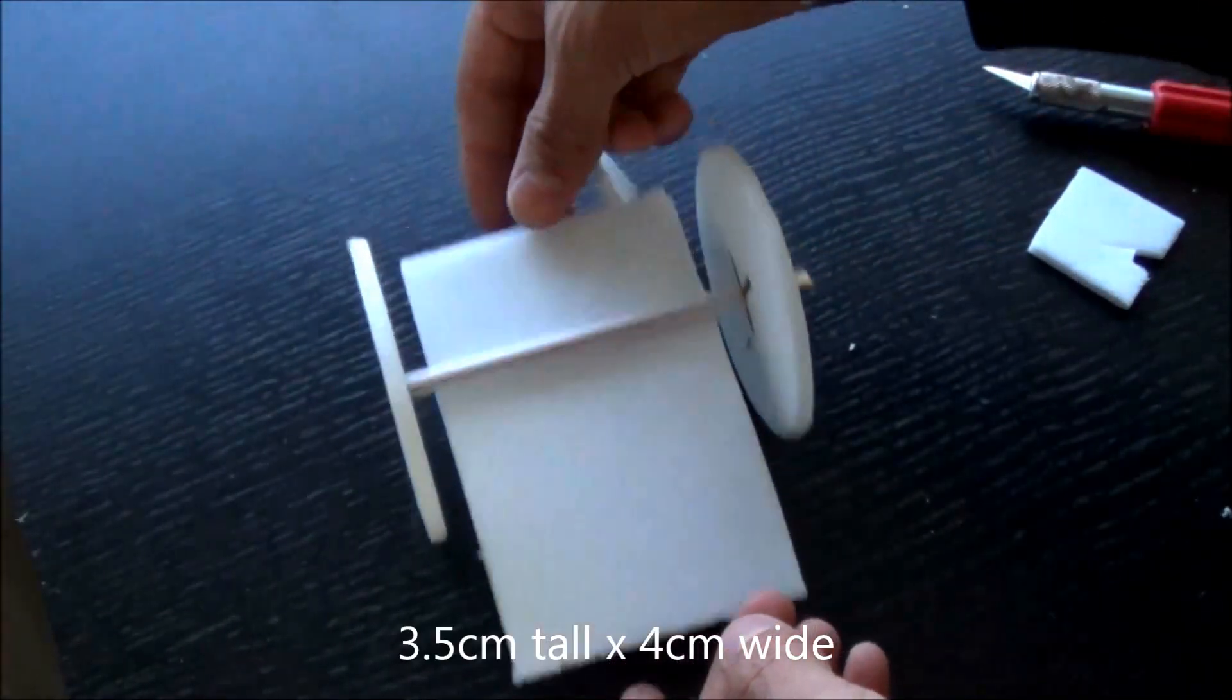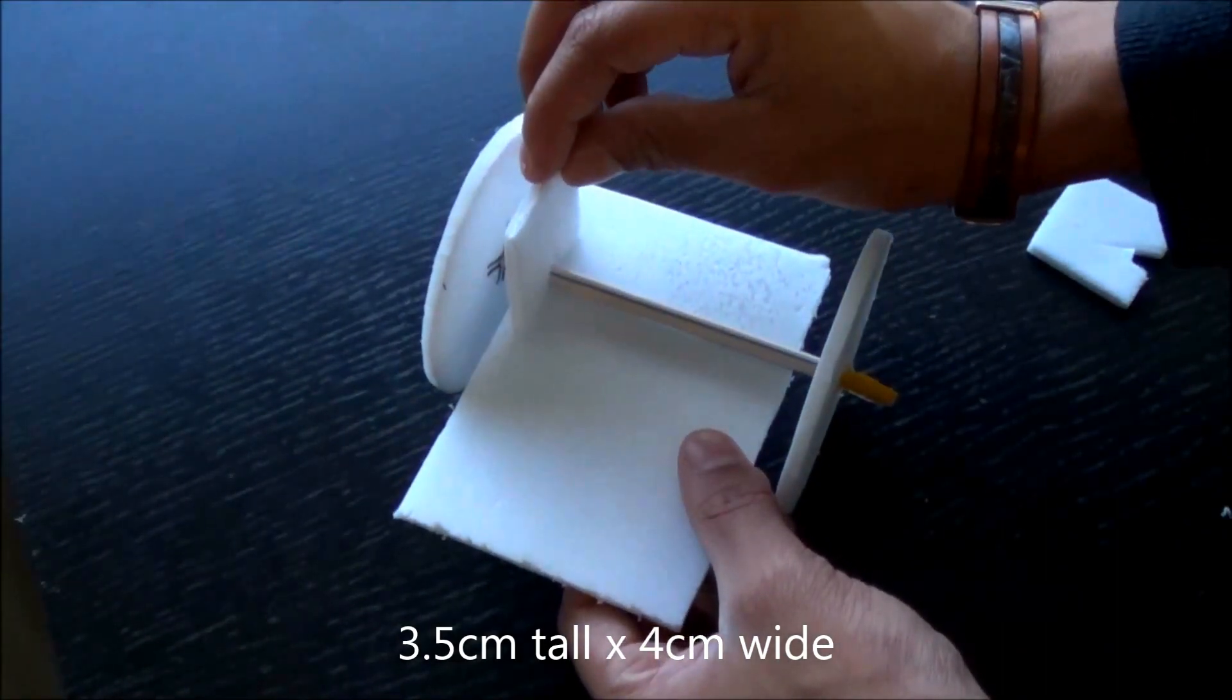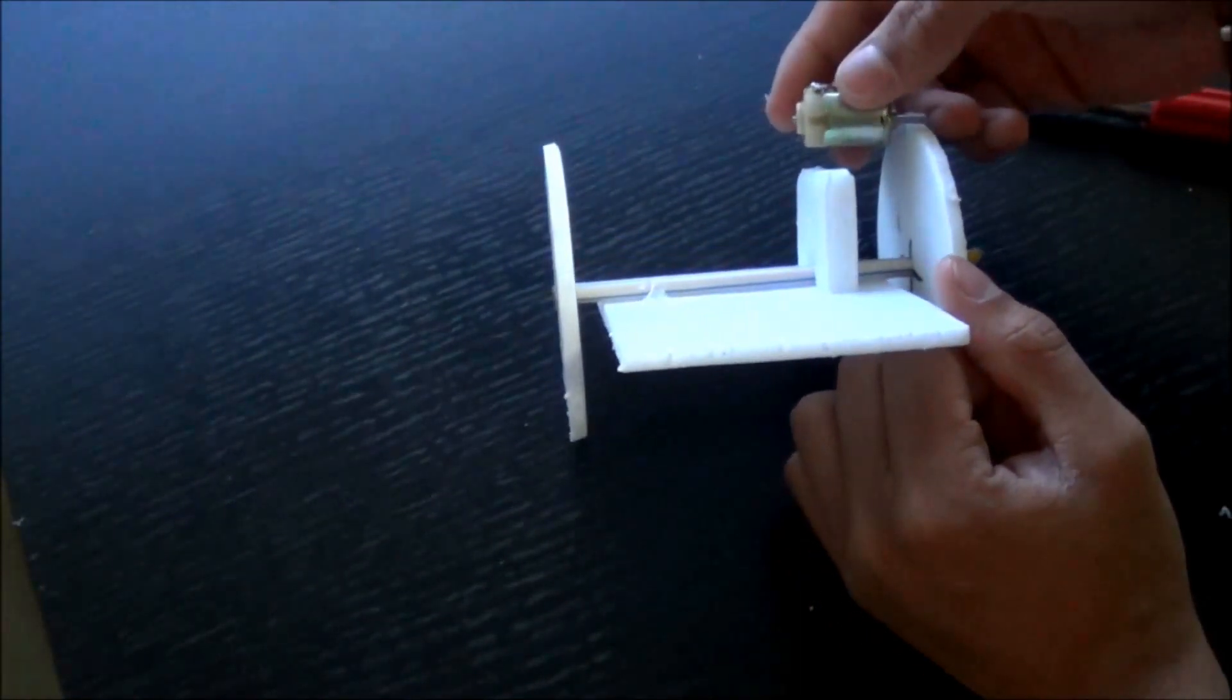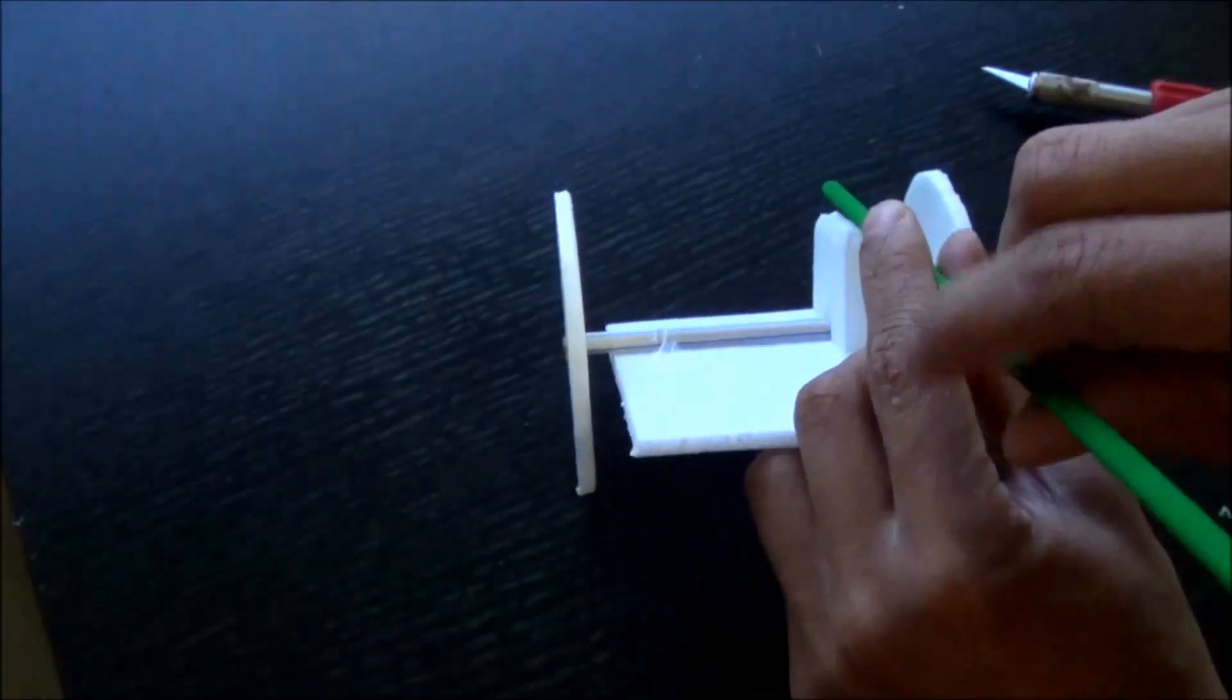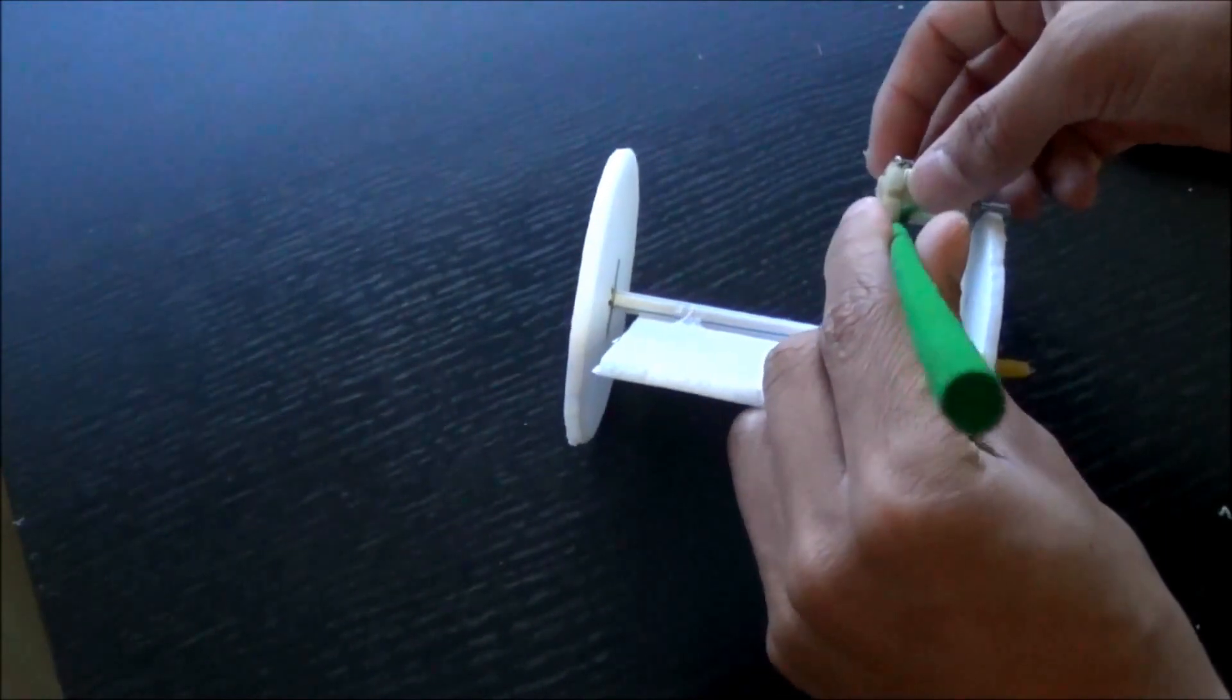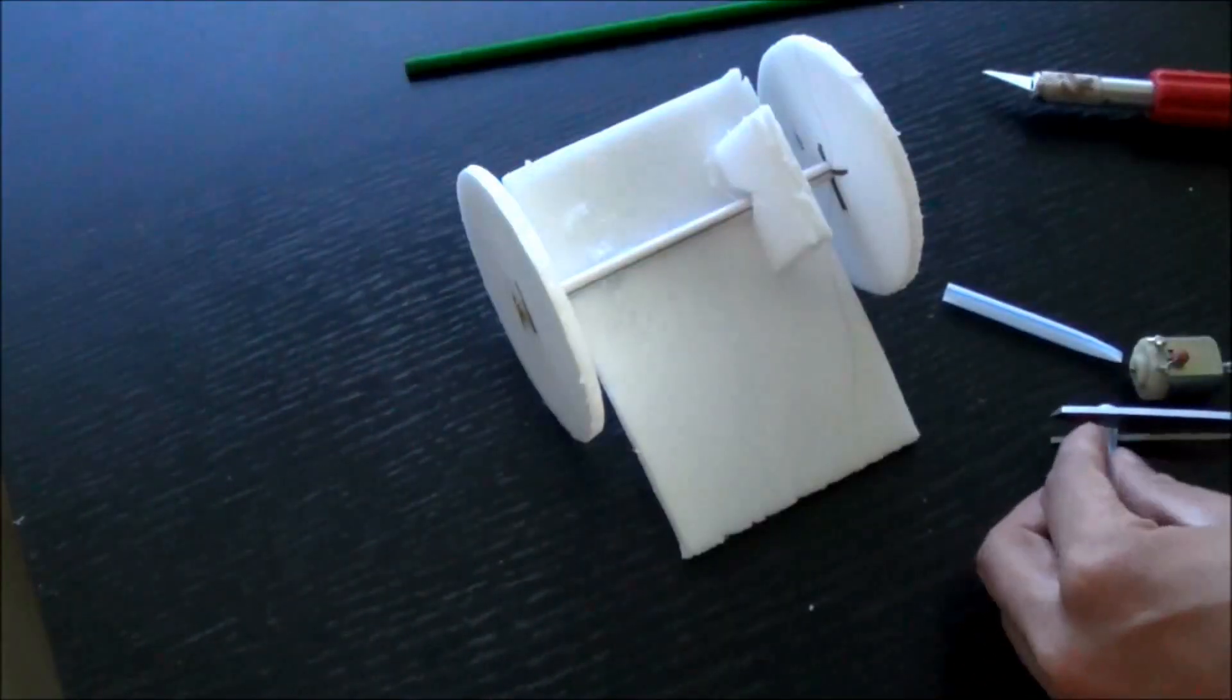I got about two pieces of foam 3.5 centimeters tall by 4 centimeters wide with the notch in the middle to prop up the motor. As you can see I cut them a little shorter than the motor. Basically you want to cut them so that a straw or dowel the size of a straw can fit in between the motor and the piece of styrofoam, and the motor will sit on that same angle there with it.